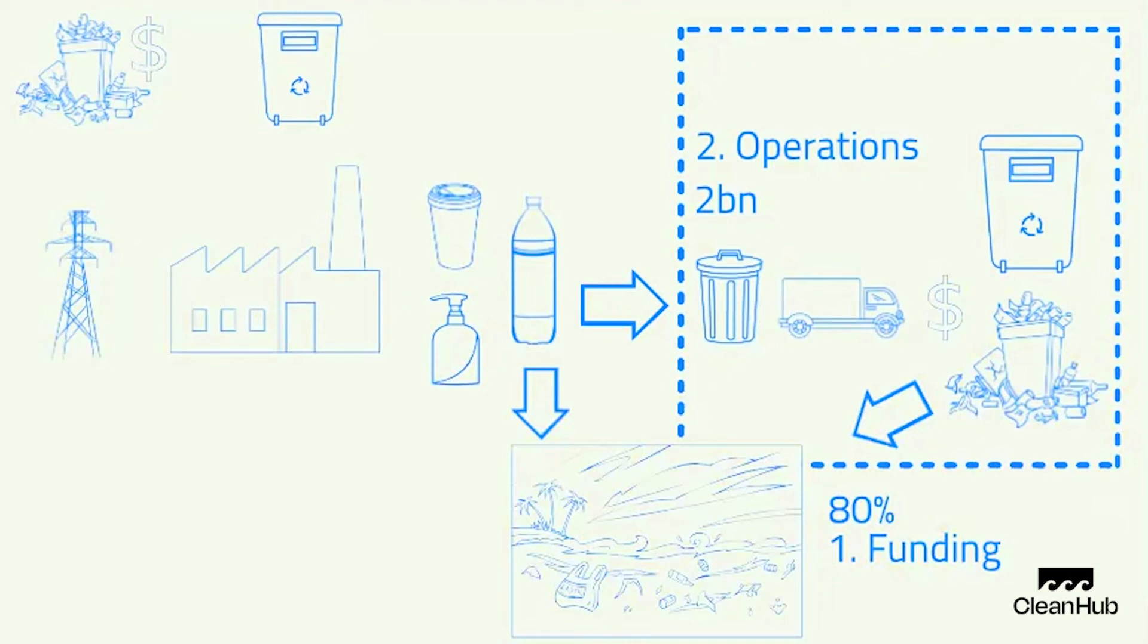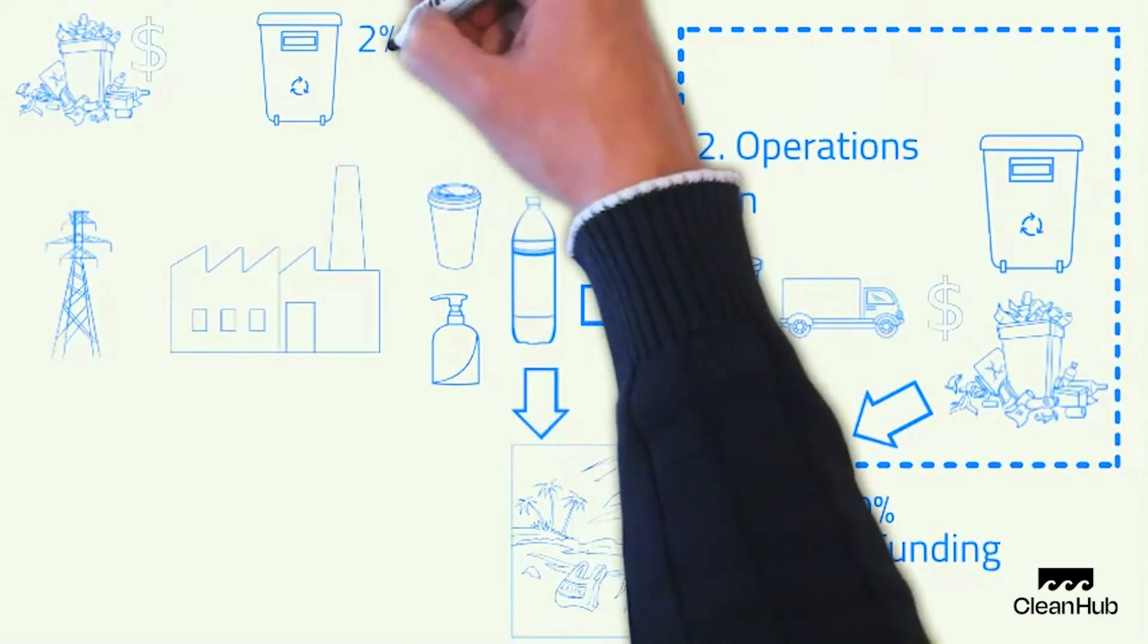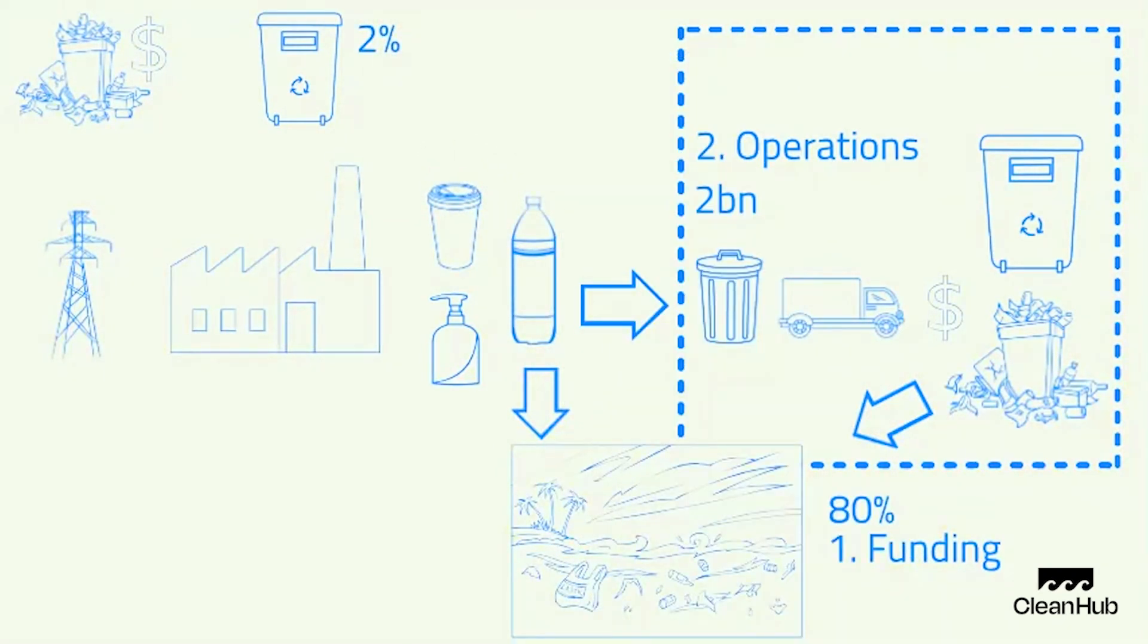Here's the third problem. Even the recyclable stuff isn't getting recycled. Only 2% of recyclable material goes back into the same application, i.e. bottles going back into bottles. This is because recycled materials are too expensive to compete with the equivalent quality of newly manufactured materials.